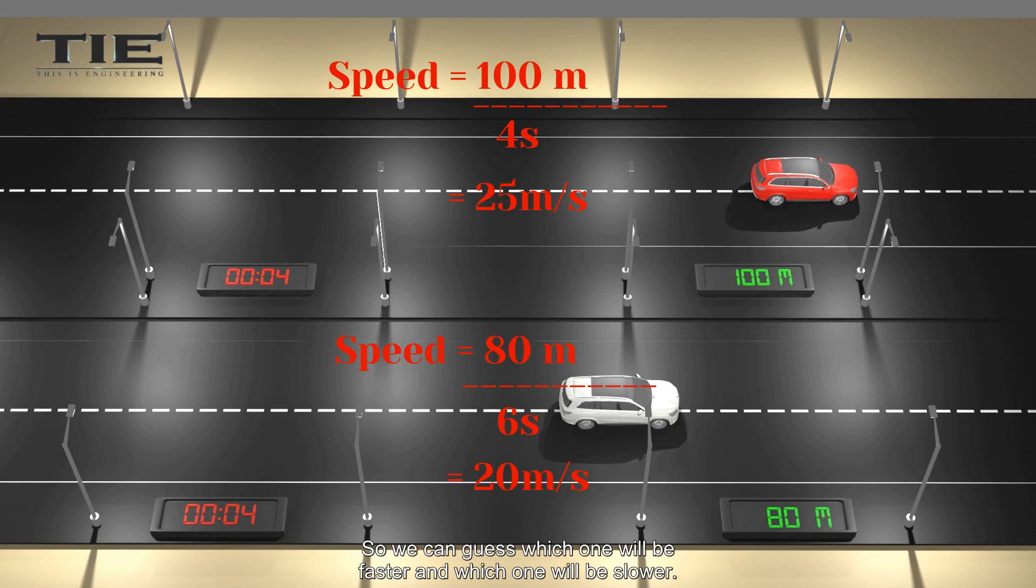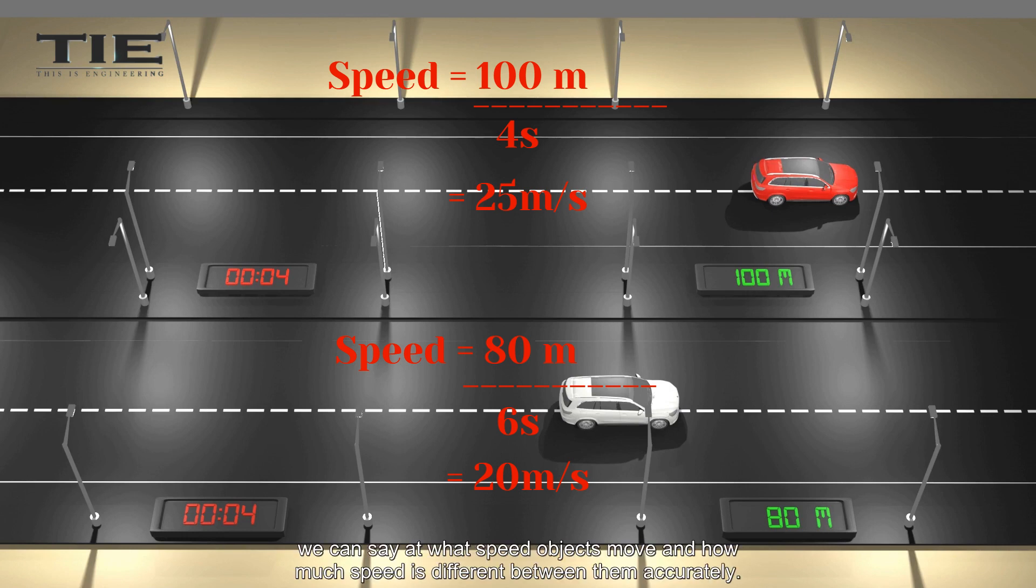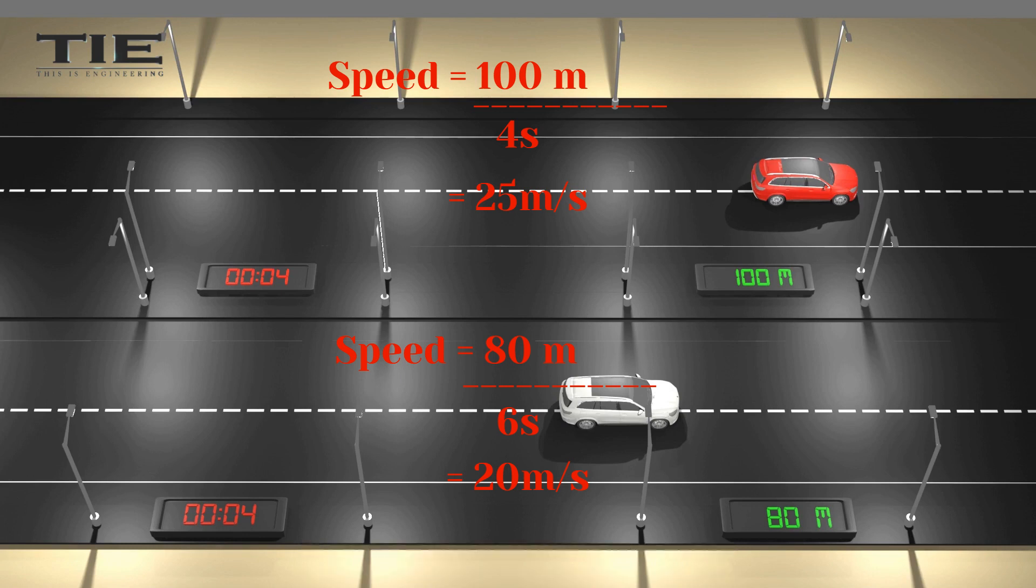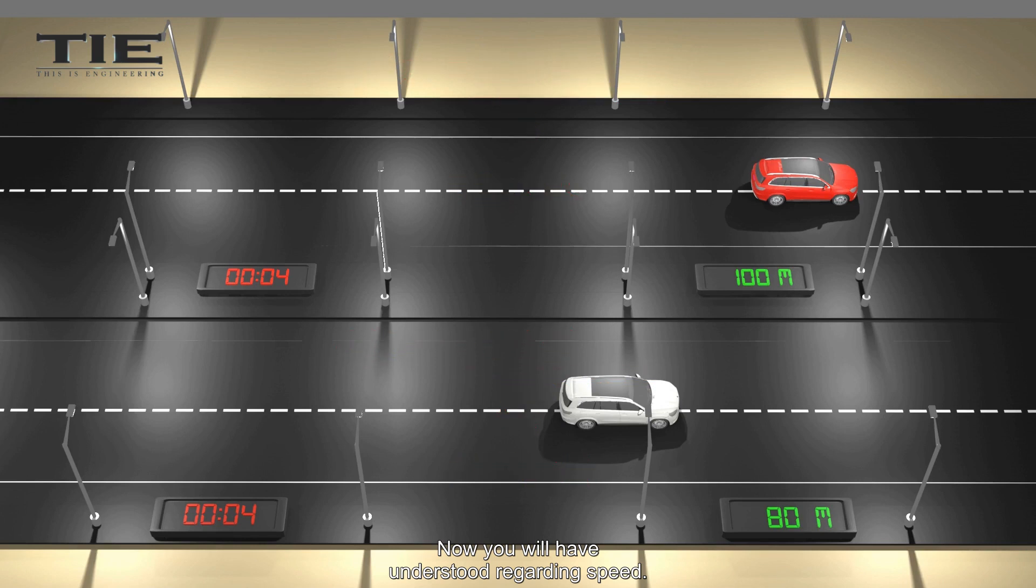So we can guess which one will be faster and which one will be slower. But by using this formula, we can say at what speed objects move, and how much speed is different between them, accurately. Now you will have understood regarding speed. Okay, let's see you next.